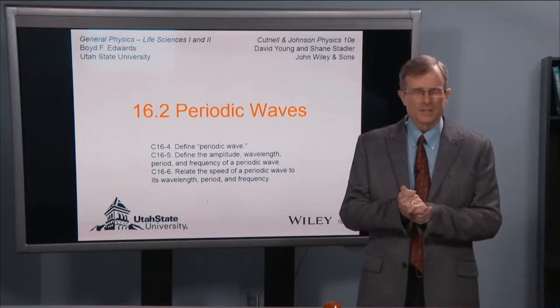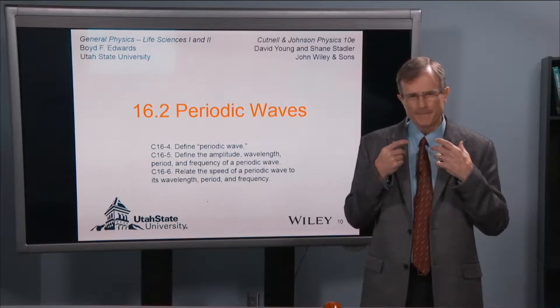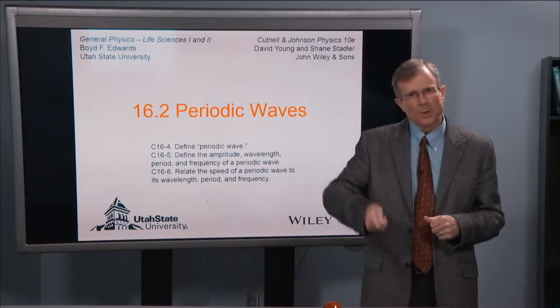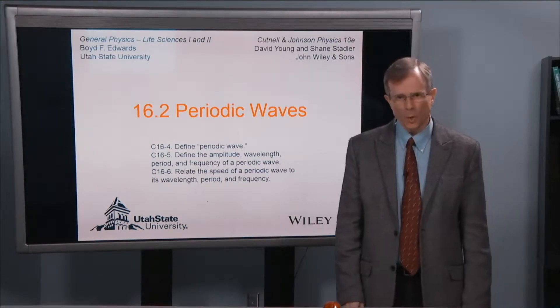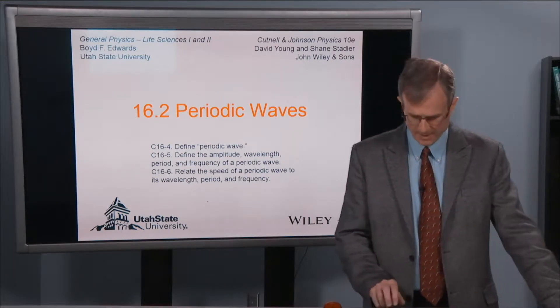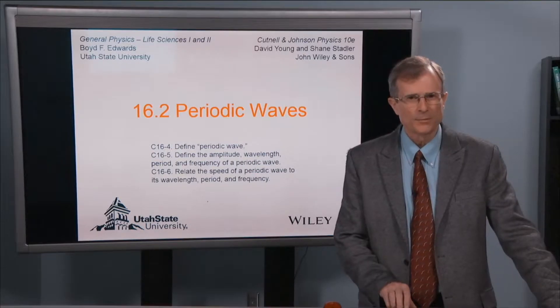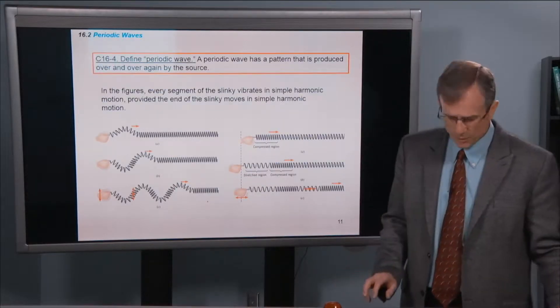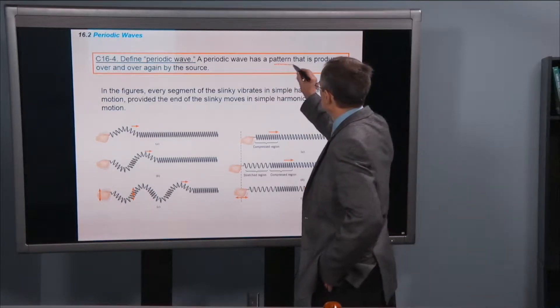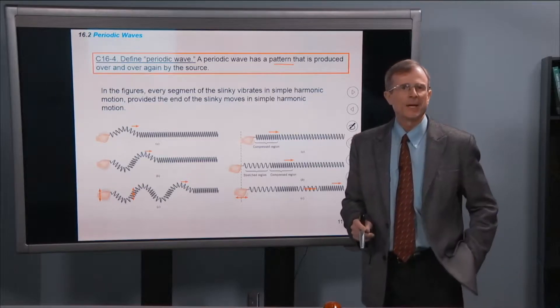Now we're going to specialize on periodic waves. They're a very special kind of wave in which the motion is repeated over and over again. We'll give some mathematical rigor to this and talk about speed of waves as they relate to the frequency and their wavelength. So first, defining a periodic wave.